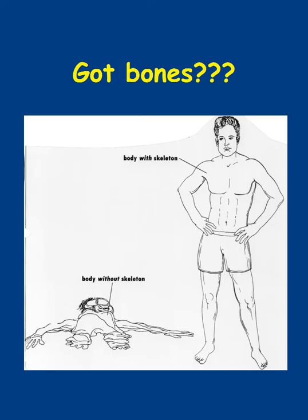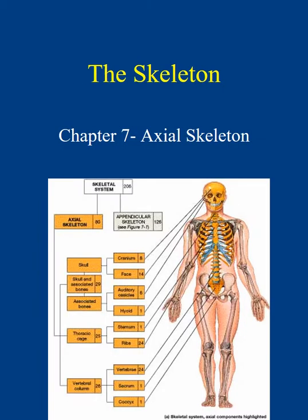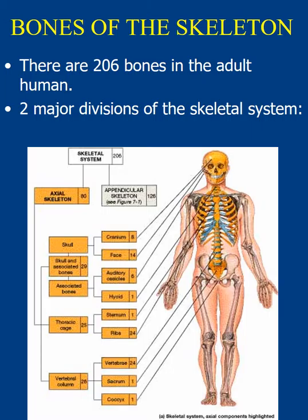Without bones, we would be a formless mass, and so bones are responsible for the structural framework that we have. In this chapter, we're going to cover the axial skeleton. As adults, we have 206 bones, whereas children and infants have somewhere around 300 bones. There are two major divisions of the skeletal system: the axial skeleton and the appendicular skeleton.